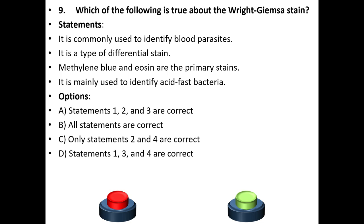Ninth question. Which of the following is true about the Giemsa stain? Statements: It is commonly used to identify blood parasites. It is a type of differential stain. Methylene blue and eosin are the primary stains. It is mainly used to identify acid-fast bacteria.